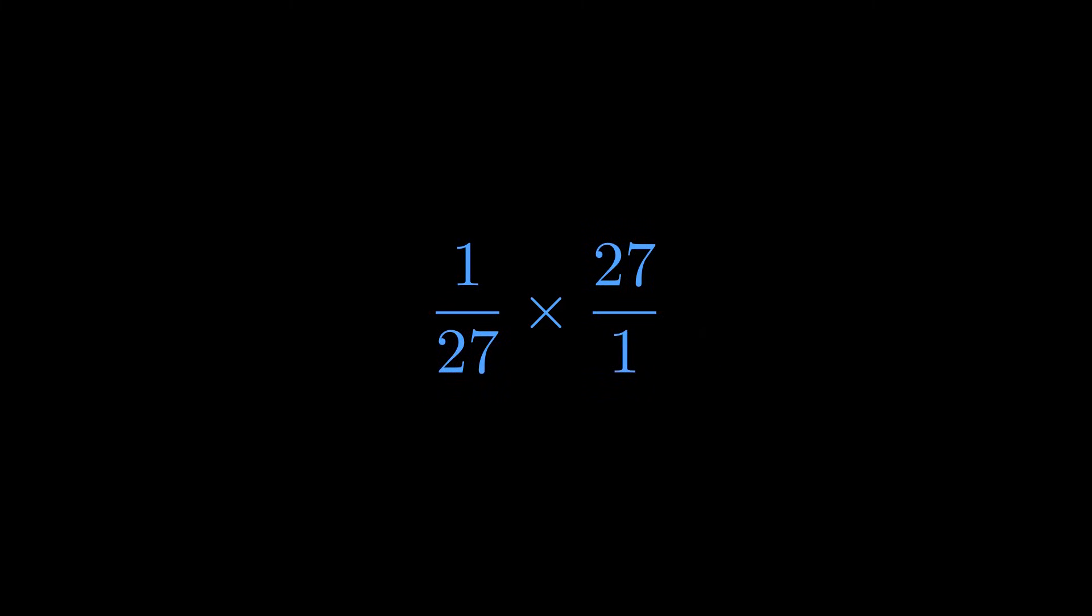So this becomes 1 over 27 times 27 over 1. The 27's cancel out perfectly, leaving us with 1. Clean, simple, symmetric.